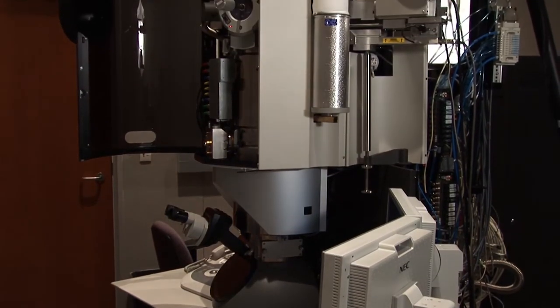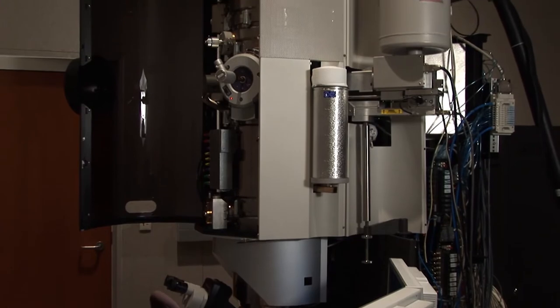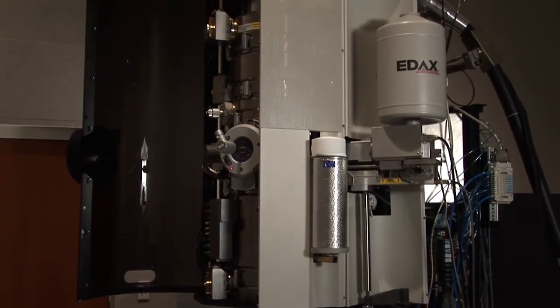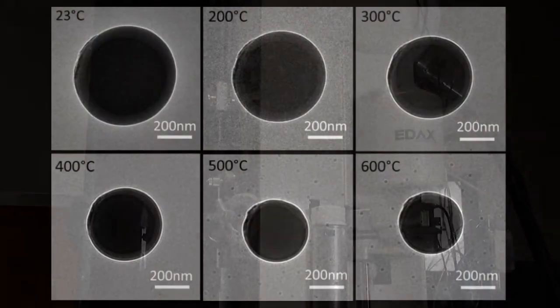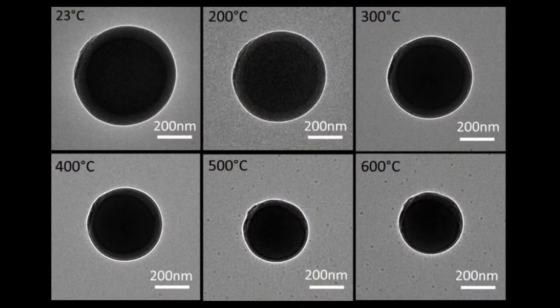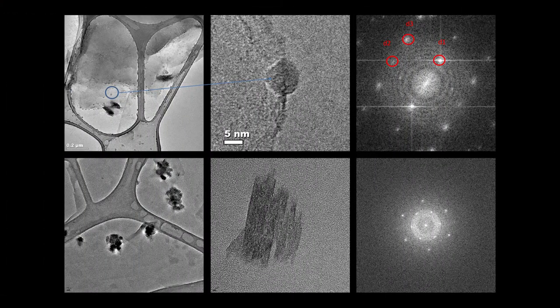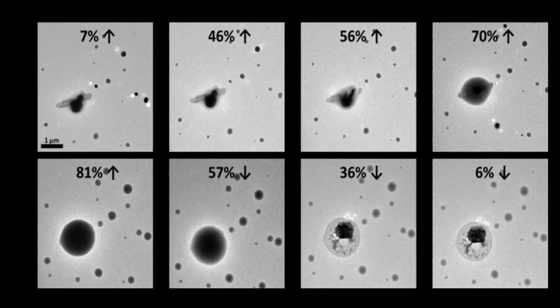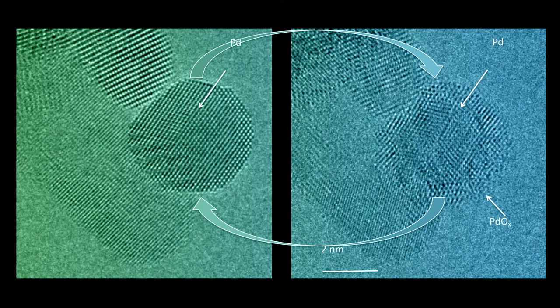It uses high energy electrons to image and analyze materials down to atomic level. We can look at different kinds of samples including biological samples, soil minerals, aerosol materials, and catalytic and battery materials.